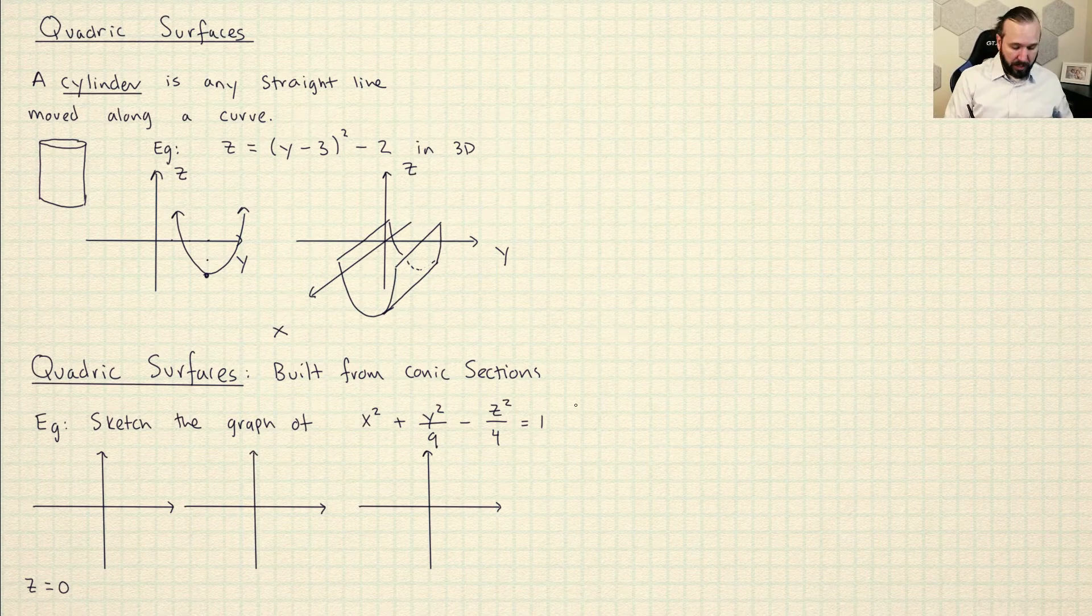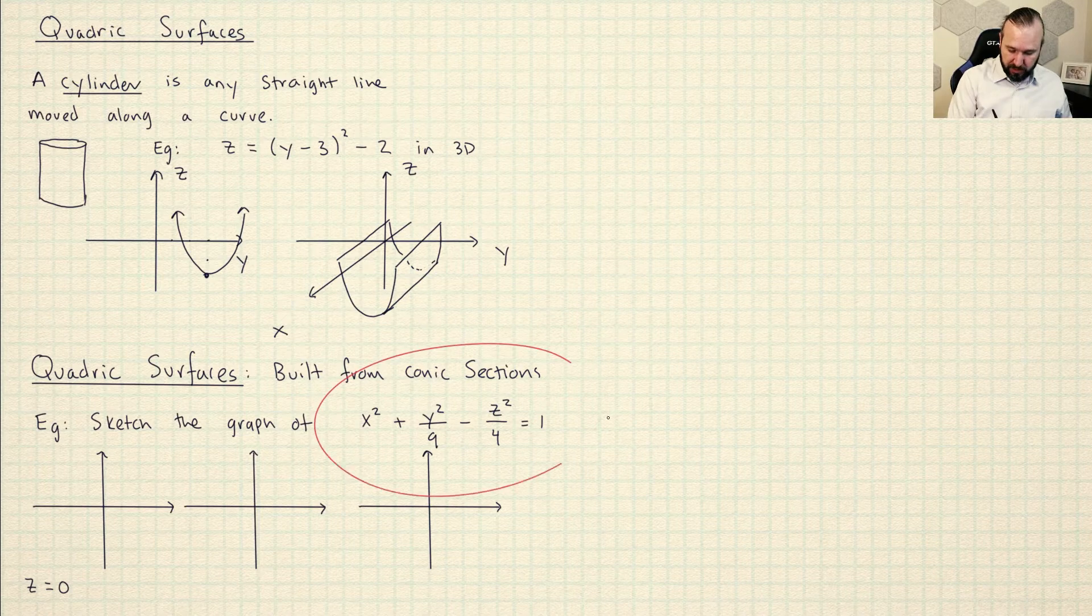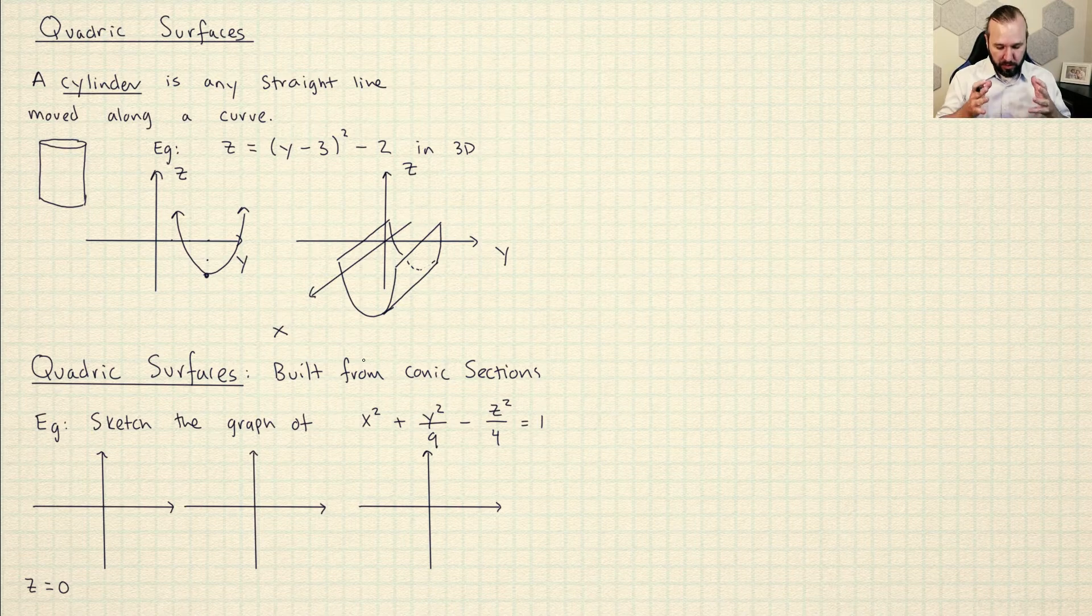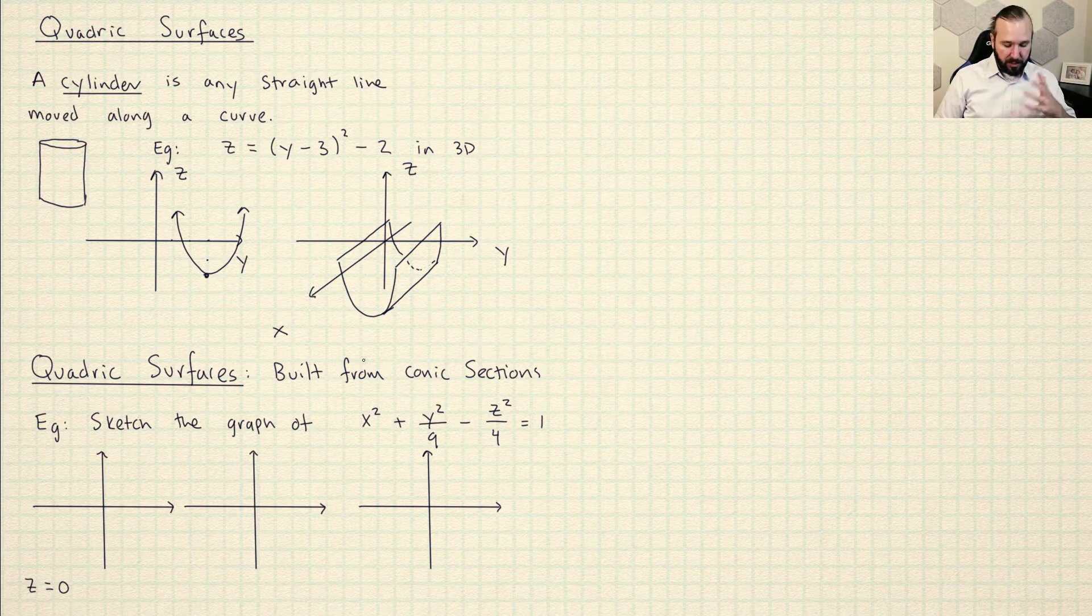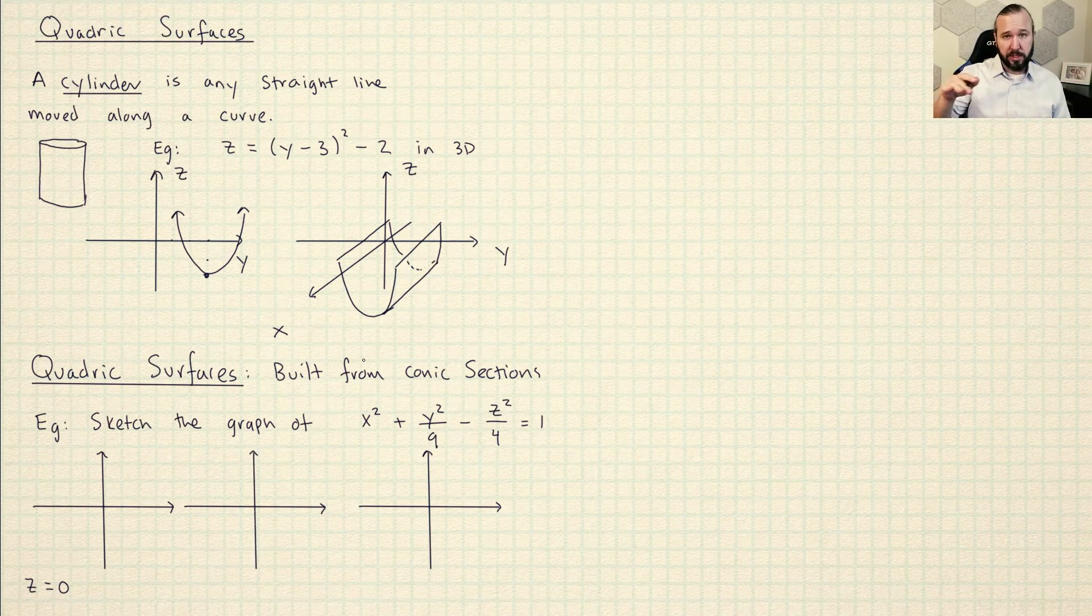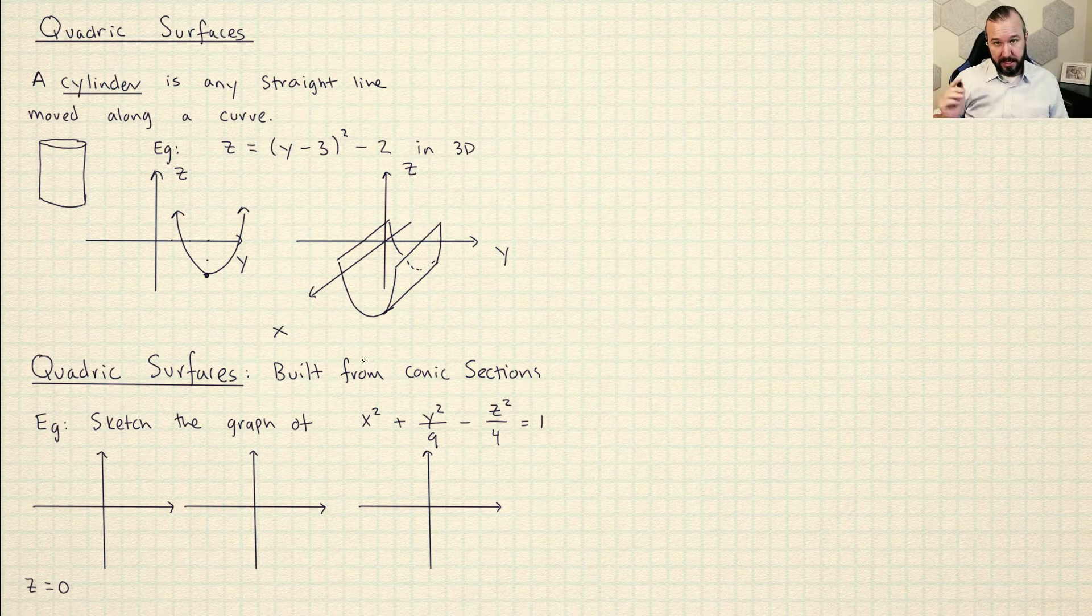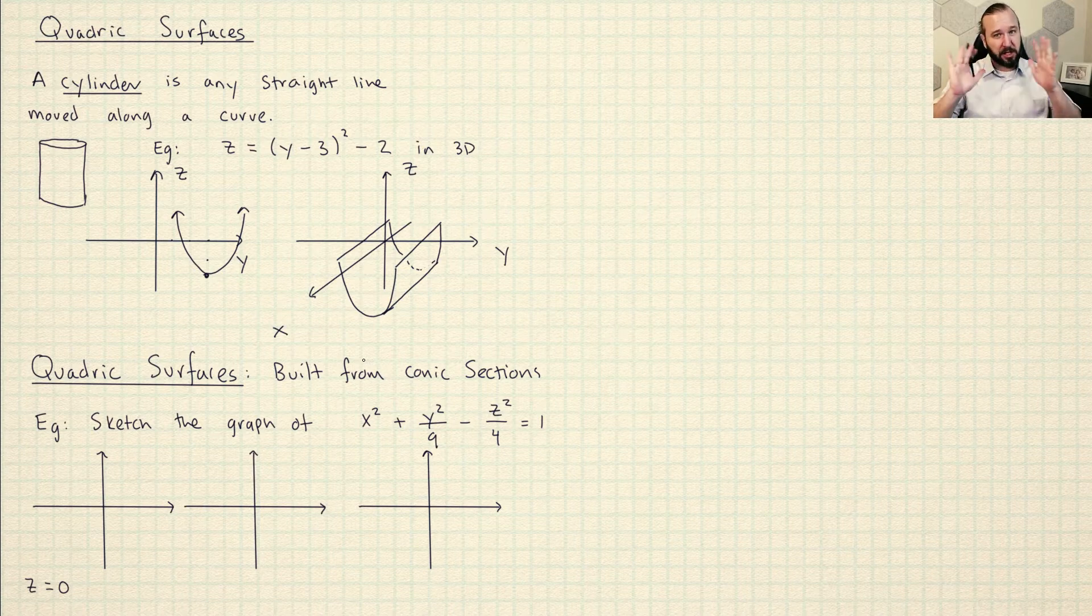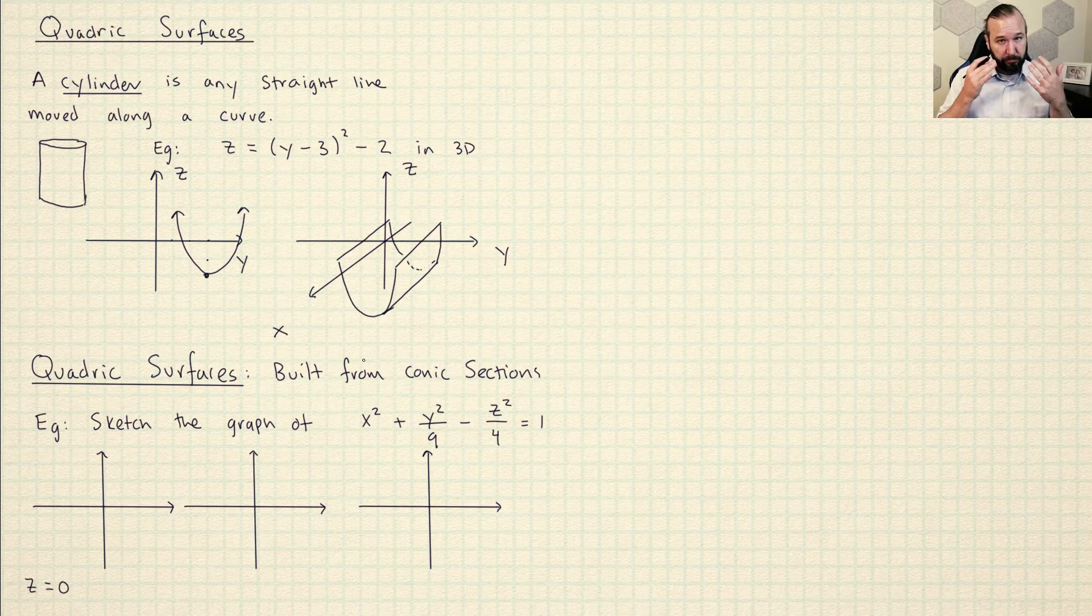I'm going to do an example here where I graph this quadric surface right here. And hopefully you'll see from how I do this what the method is that you can use to graph any quadric surface. So I like to think of it as a house and the first thing that I'm going to do is I'm going to pick some slices for Z and then that will kind of give me the floor plan of the house. And then I'm going to pick slices for the other letters X and Y and then that will kind of tell me what the walls of the house look like.